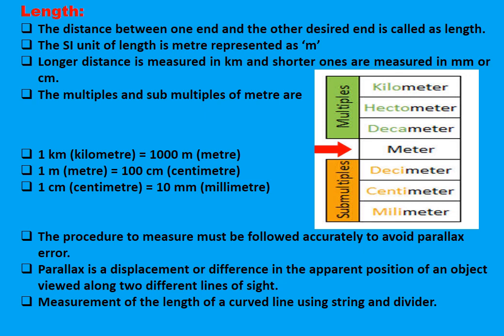The multiples and sub-multiples of meter are: Multiples - kilometer, hectometer, and decameter. Submultiples - decimeter, centimeter, or millimeter.